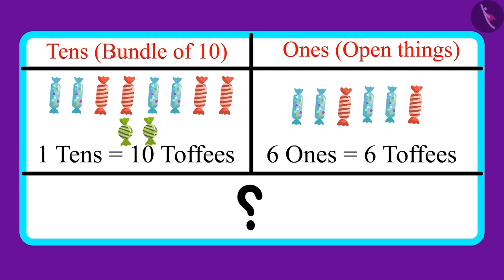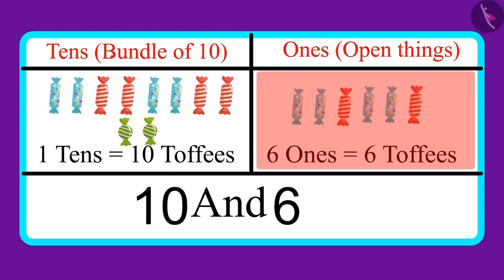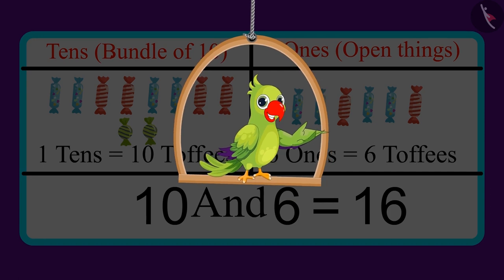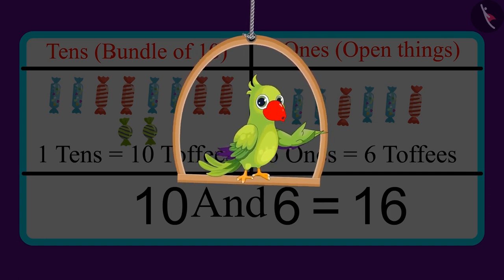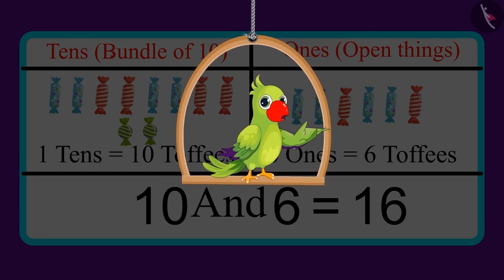One tens means ten toffees and six ones means six toffees, which means these are sixteen toffees. Your answer was also the same, right? Very good.